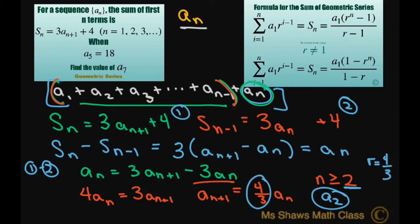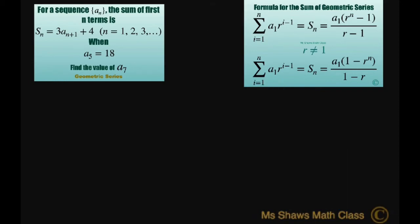So let's finish this up. We have a sub 7, that's what we're looking for. It equals 4 thirds times the previous term, which is a sub 6. Now we have a sub 5, so I can write this as 4 thirds squared, because this is your common ratio.